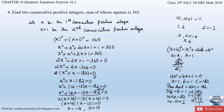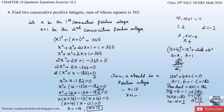Since the question asks for positive integers, we discard x equals minus 14 and take x equals 13. Therefore the first consecutive positive integer is x equals 13 and the second is x plus 1 equals 14. The two consecutive positive integers are 13 and 14.